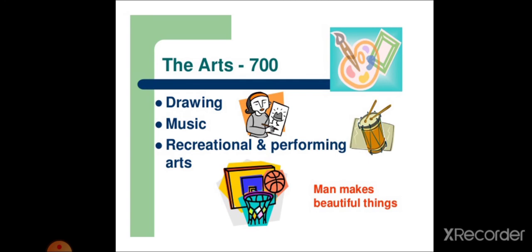Man makes beautiful things. The arts. The arts comes under 700. Drawing, music, recreation and performing arts, all comes under this category.